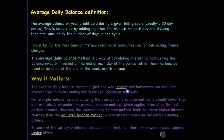Why does this matter? Because this is just one way that lenders and borrowers can calculate interest. The Truth in Lending Act describes all the different acceptable methods. For example, interest calculated using the average daily balance method is usually lower than interest calculated under the previous balance method, which applies interest to the last period balance. However, the average daily balance method tends to create higher interest than the adjusted balance method, where interest is based on the period ending balance. Because there are these different methods, it is important for you as a borrower to compare different lender offers.